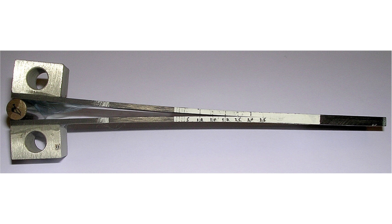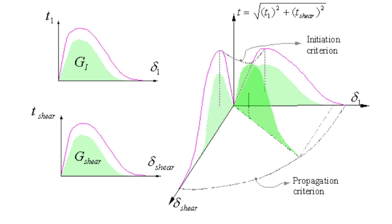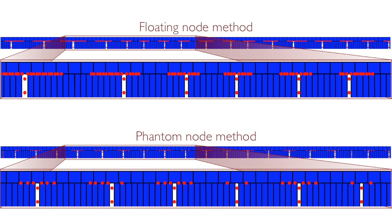Laminated composites can fail when the individual lamina — that is, the plies — debond from each other. This is known as delamination. Predicting the growth of delaminations has received considerable attention in the literature. Our main contributions in this field have been to incorporate non-linear geometric behavior into an existing finite element model, to implement one of the first cohesive elements in an explicit finite element code, to investigate the effect of discontinuities in the cohesive law on stability, and to investigate the interaction between delamination and matrix cracking.